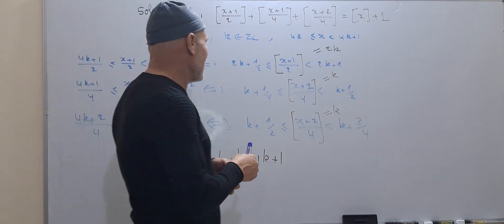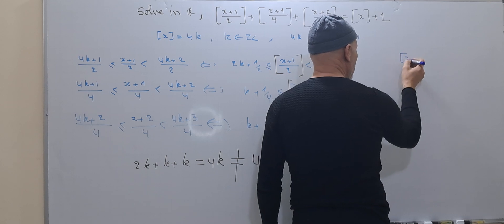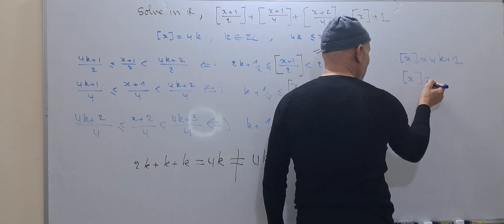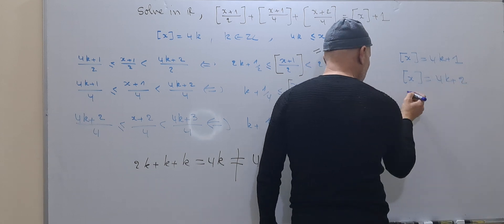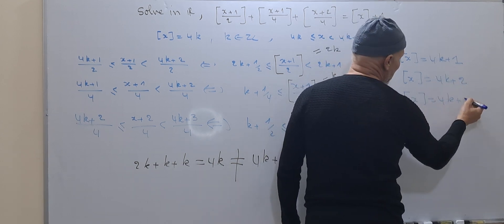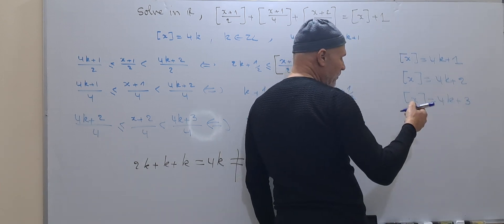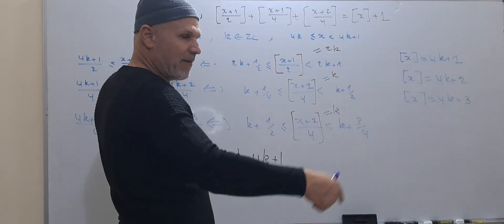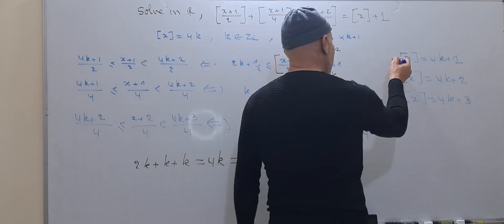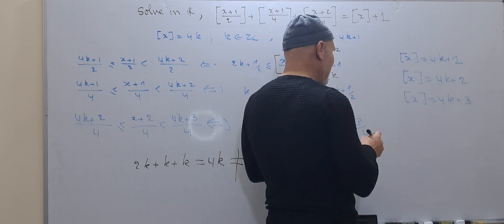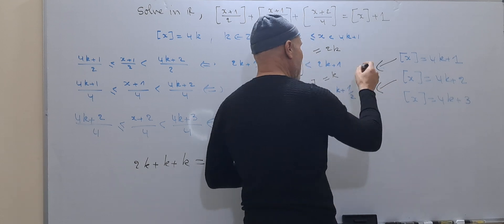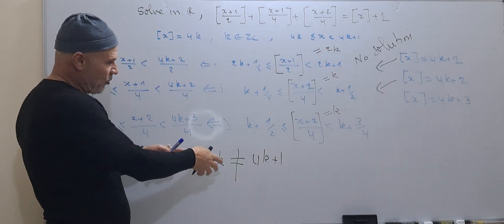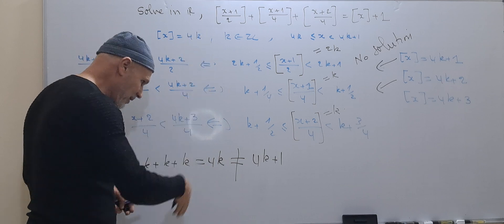Second, we will take the integer part of x equal to 4k+1, then 4k+2, and 4k+3. If we take the integer part of x equal to 4k+4, this means we are back to the start, so we have periodicity — this is enough. For the cases 4k+1 and 4k+2, the equation will not balance for the same reason, so we have no solution in those cases.